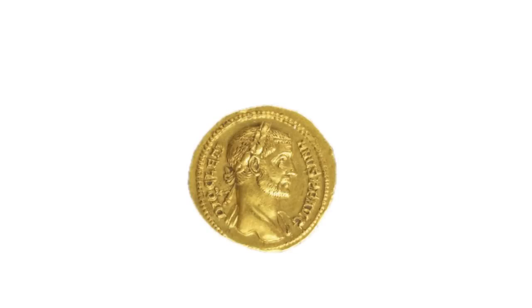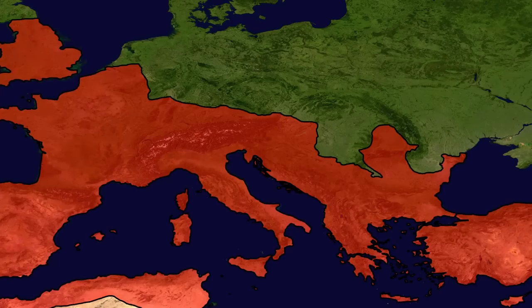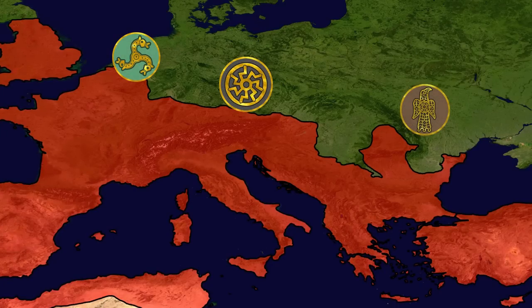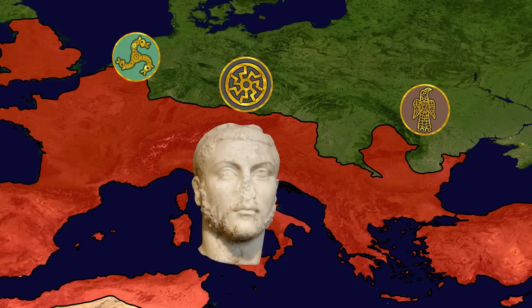Diocletian came to power following five tumultuous and civil war-ridden decades, which saw the rise and fall of more than 30 emperors, most of these men perishing at the hands of their own soldiers. One recurring scenario of the 3rd century crisis was when the borders of the empire were threatened on multiple fronts. Despite his immense power, not even a Roman emperor was capable of being in two places at the same time, so to deal with the threats, emperors were forced to delegate power and sizable armies to their subordinates.